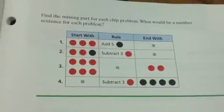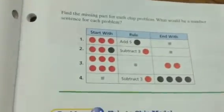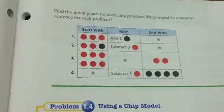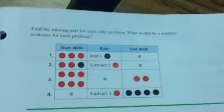So the first one says start with 3 red, which is negative 3, and then we're going to add positive 5. So let's see what we end up with. We have that gray dot right on the end with section. We're going to find out what we're going to actually end with.